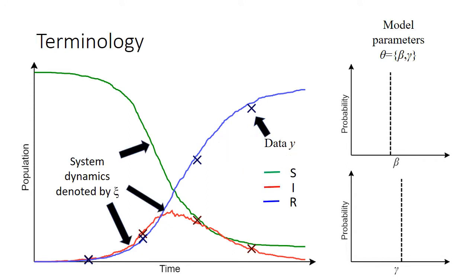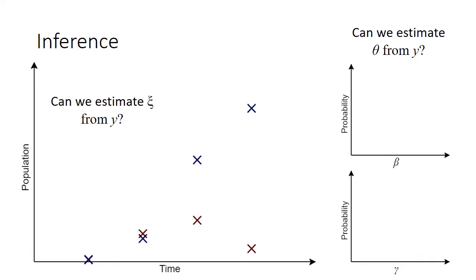To clarify the terminology we will be using, the model parameters are collectively referred to as theta. The curves on the left, which denote the underlying system dynamics, sometimes called the state, are referred to as xi, and the data, denoted by the crosses, are referred to as y. Inference is the process by which we try to estimate the model parameters theta and true system behaviour xi, based on whatever data y we happen to have.